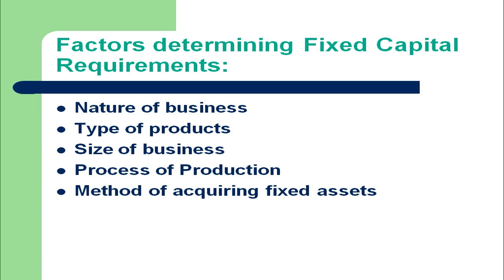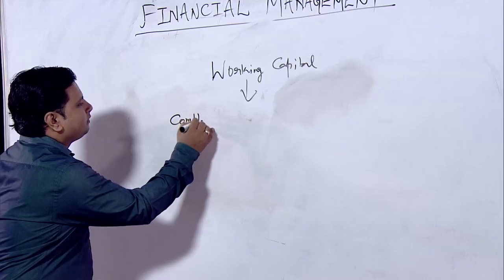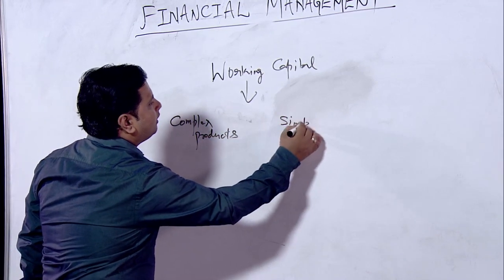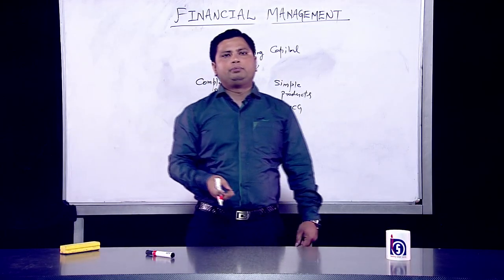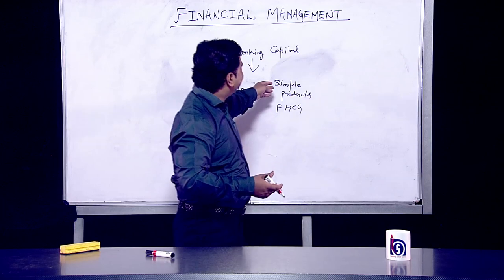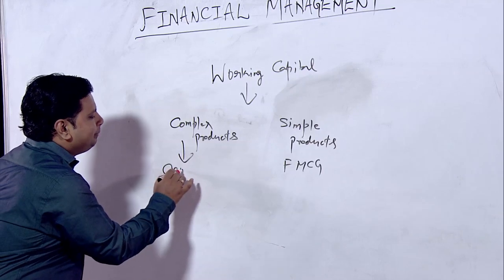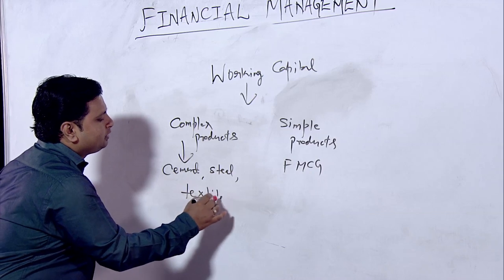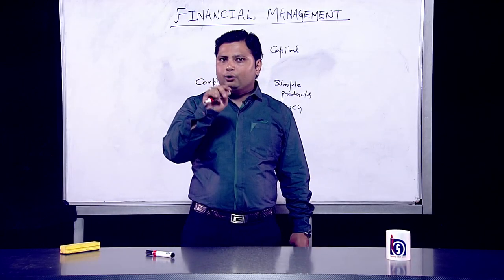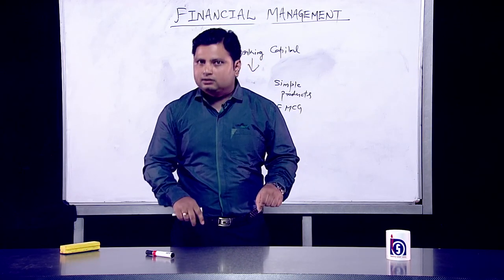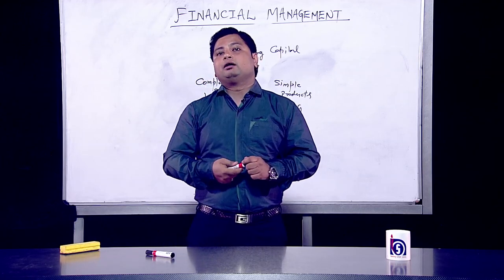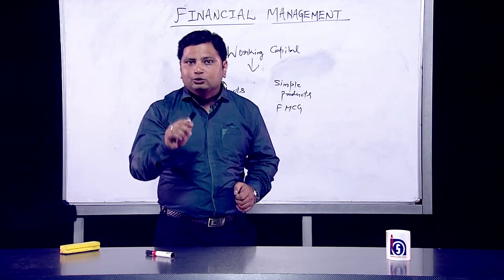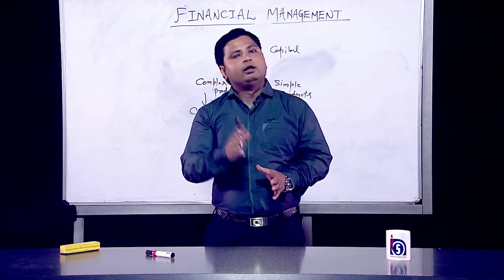The second factor is type of products. There are two types of products: complex products and simple products. Simple products are FMCG items like soap, oil, toothpaste, and toothbrush. Complex products include cement, steel, textiles, ship manufacturing, or plane manufacturing. An organization producing a complicated product like cement or steel will require a great deal of big equipment, and therefore its requirement of fixed capital would be high compared to an organization producing simple FMCG items.